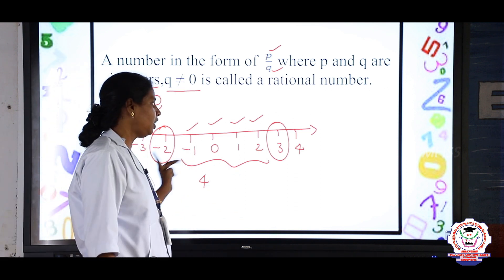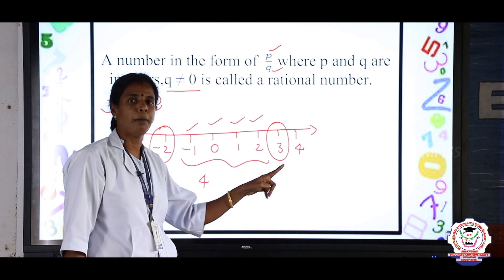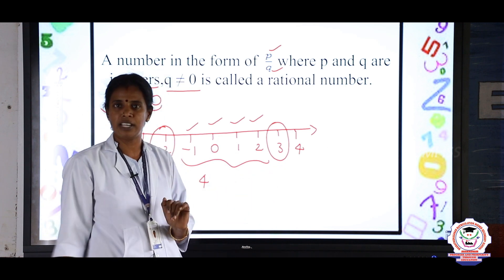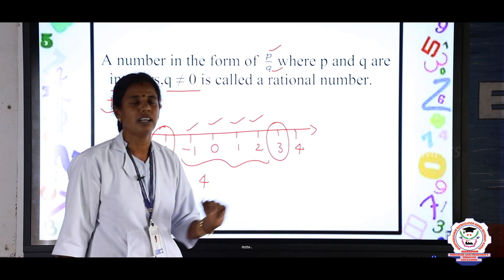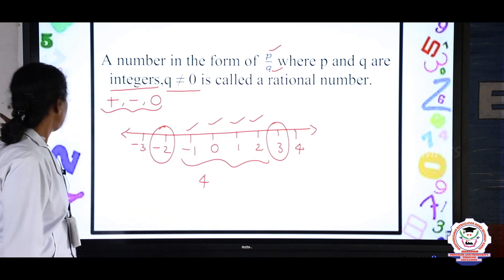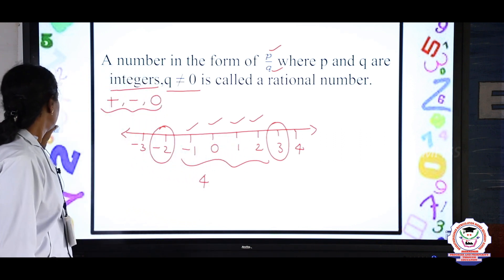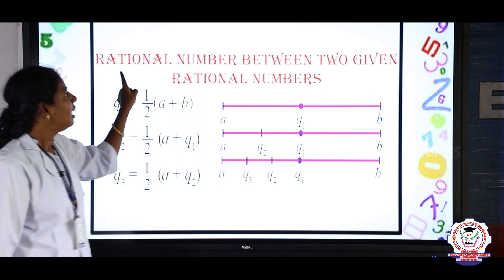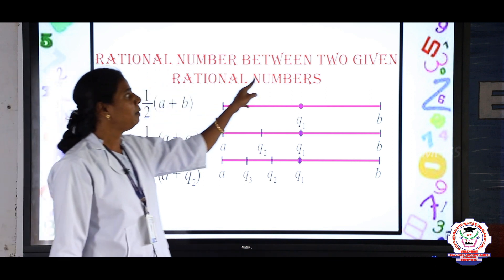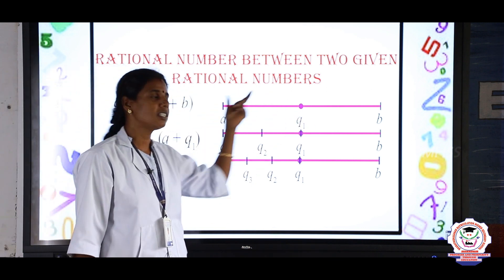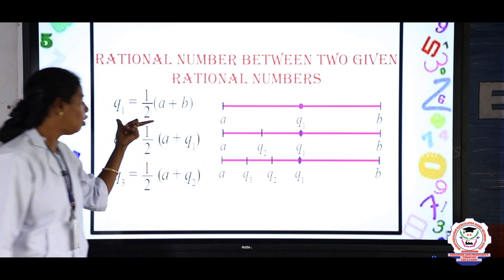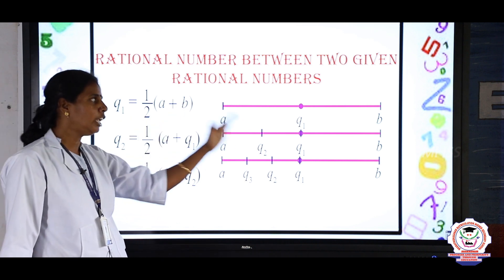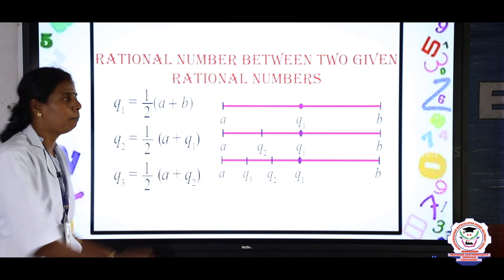In rational numbers, between any 2 rational numbers we can find an infinite number of rational numbers. So, how do we find the rational numbers? We will see the rational number between 2 given rational numbers. This is the formula to find the rational number between any 2 rational numbers.